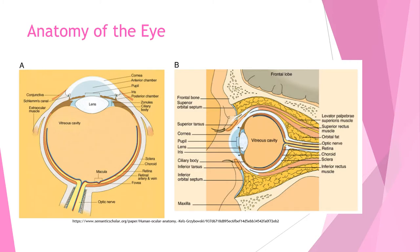Before we move on to thyroid-related ophthalmopathy, let's explore the anatomy of the eye. The eye is placed within the orbit and surrounded by orbital fat, which insulates and protects the eye and keeps it at its level to prevent it from being sunken in. The eye is also tethered to six extraocular muscles: the superior rectus, superior oblique, inferior rectus, inferior oblique, lateral rectus, and medial rectus. The lateral rectus is controlled by the sixth abducens nerve, the superior oblique by the fourth or trochlear nerve, and the remaining four muscles by the third or oculomotor nerve.